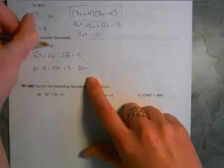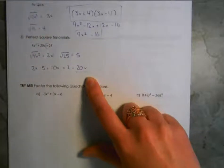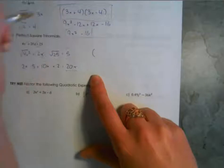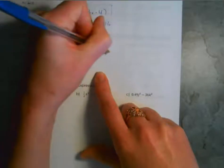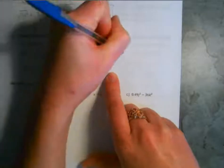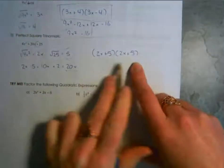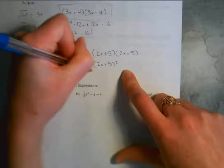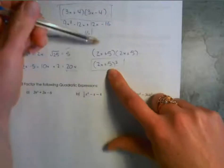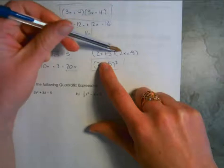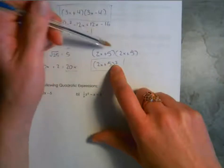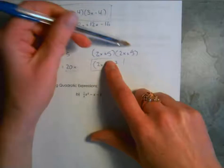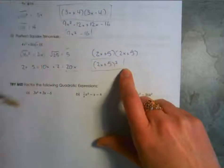Since everything is all pluses, my answer is: take the two terms solved here, 2x plus 5 and 2x plus 5. You can write it as 2x plus 5 squared. If you multiply it out: 2x times 2x is 4x squared; 2x times 5 is 10x; 2x times 5 is another 10x — that's why we double the number we came up with; and 5 times 5 is 25. This confirms the answer is correct.